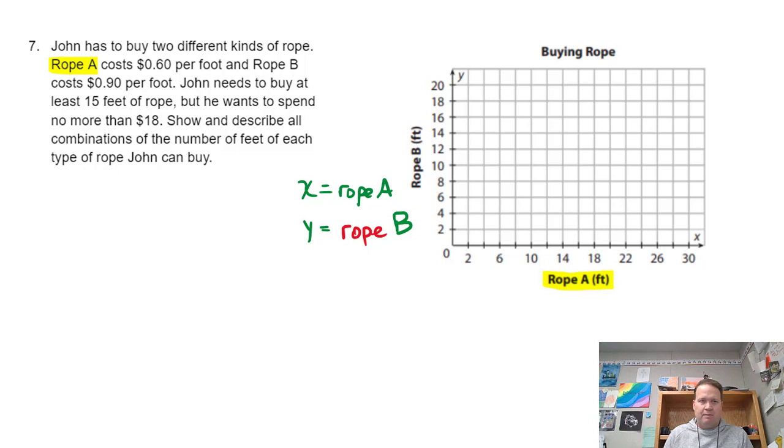So the next thing I need to identify is now that I've got my variables, I know that rope A is 60 cents a foot. So that means that I pay 60 cents for every A foot that I buy. And A is x. I'm going to go 0.60x. That's 60 cents times however much I get of x. And rope B is 90 cents a foot. But that's going to be 0.90y. And it tells me that he can't spend any more than, no more than $18.